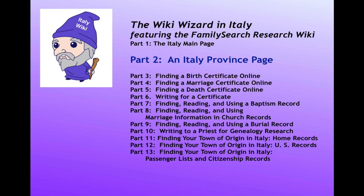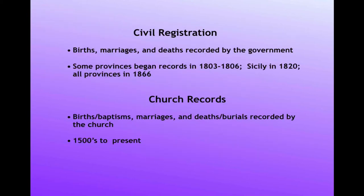This is the second lesson in a series intended to help you find records about your ancestors who lived in Italy using the FamilySearch Research Wiki. The vast majority of the research you do in Italian records will use just two record groups: civil registration and church records.